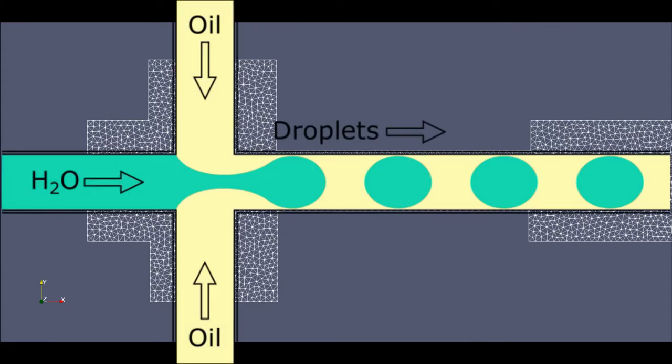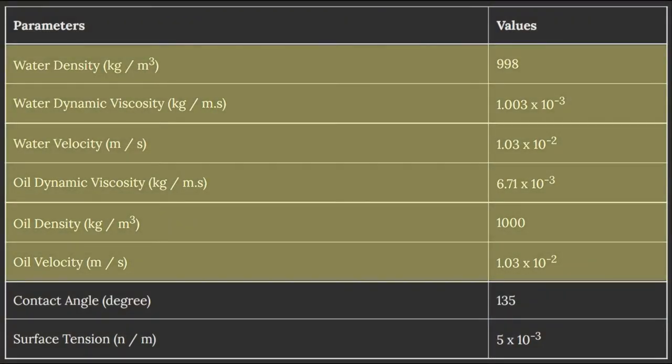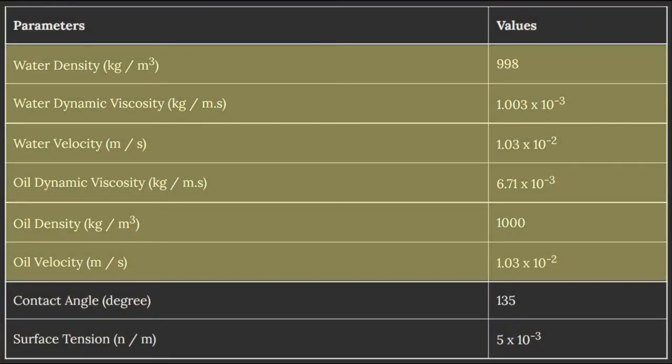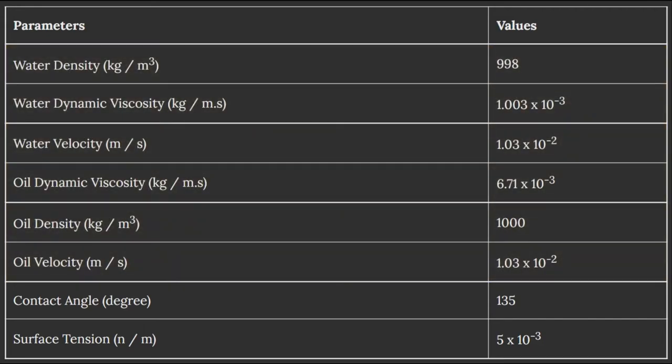Before we add any further parameters, we need to set the inlets and outlets. Looking at the mesh, this demo requires flow of phase 1 from the central inlet and flow of phase 2 from the top and bottom of the channel. The speed at which these two flows meet will create pinching. We need to consider the fluid properties such as dynamic viscosity, density, and velocity — here we have two sets for the two flows.